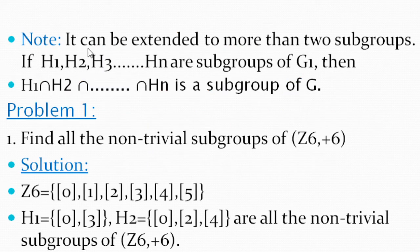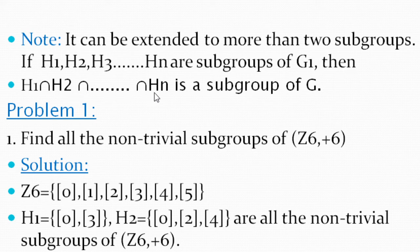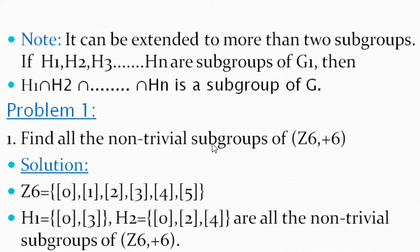Note: Theorem 3 can be extended to more than two subgroups. If H₁, H₂, H₃, ..., Hₙ are subgroups of G, then H₁ ∩ H₂ ∩ ... ∩ Hₙ is also a subgroup of G. Problem 1: Find all the non-trivial subgroups of Z₆ under addition modulo 6. As defined earlier, trivial subgroups are {E} and G itself; all others are non-trivial subgroups.